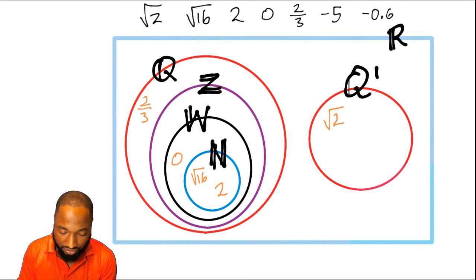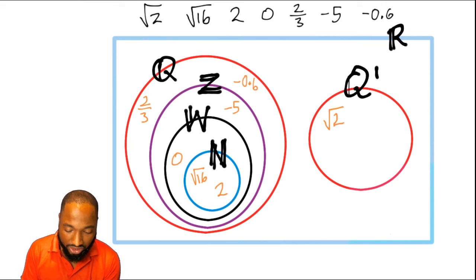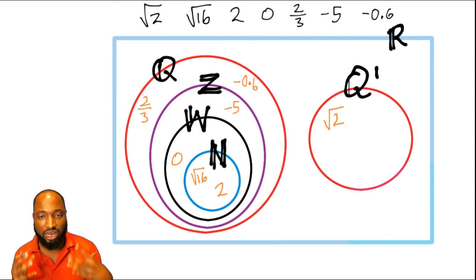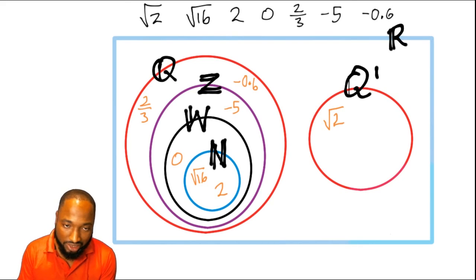Negative 5, it's not a fraction, so you can put this as an integer. Even though it's negative, we know we have negative and positive integers. What about negative 0.6? Decimals. So he's going to have to go out here. So you need to know how to follow a little Venn diagram like this if you're faced with such a challenge.